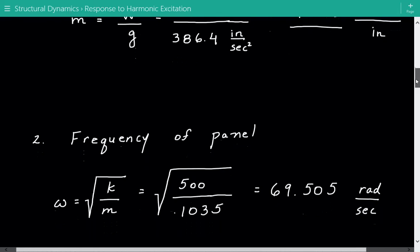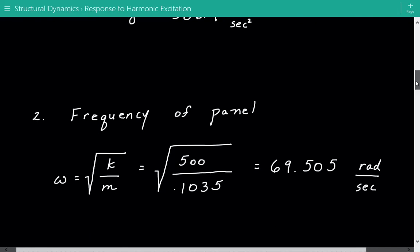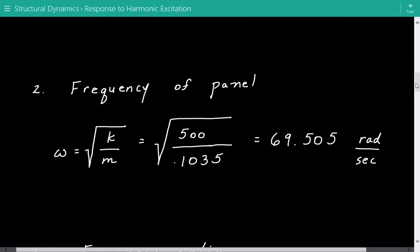Next we're going to calculate the circular natural frequency of this panel. That's equal to the square root of the stiffness divided by mass, so that comes out to be 69.505 radians per second.